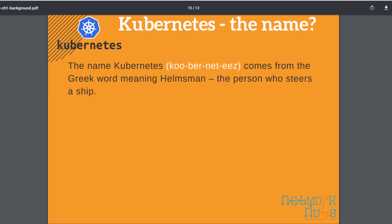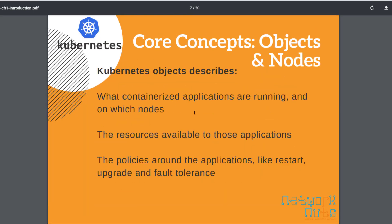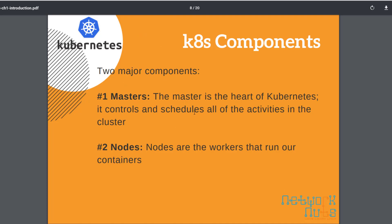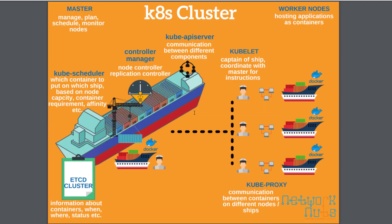Kubernetes has two major components. Consider the master as the Independence Day mothership, controlling everything — every child ship, where to attack, what to do. When the mothership goes down, all child ships drop dead and cannot be controlled. So the mothership is the Kubernetes master, and the nodes are the child ships — the actual machines on which Docker is installed and running the applications.